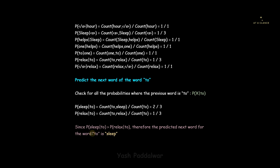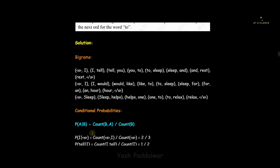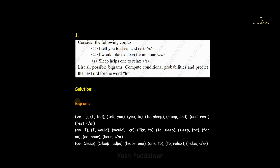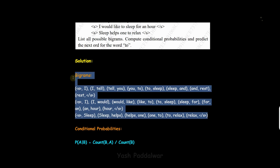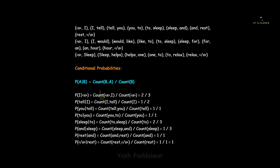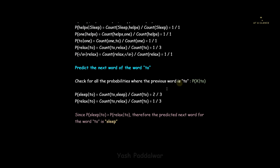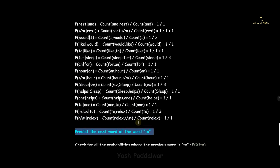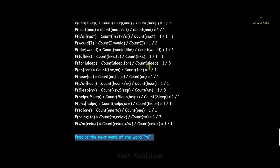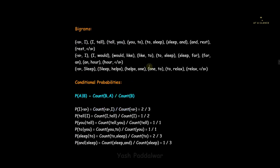This is how we solve this problem. We listed all possible bigrams for the three statements, calculated the conditional probabilities using the formula, and finally predicted the next word for '2' by comparing the probabilities. I hope the entire problem is clear.